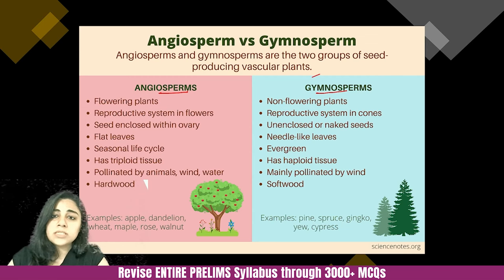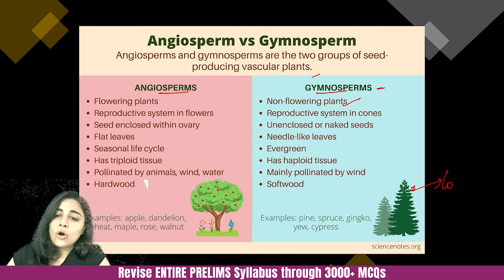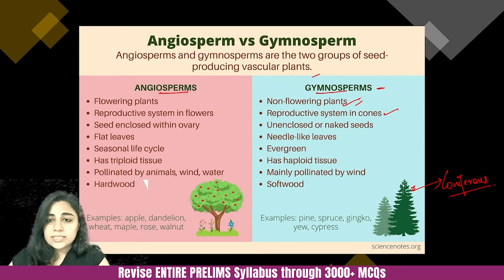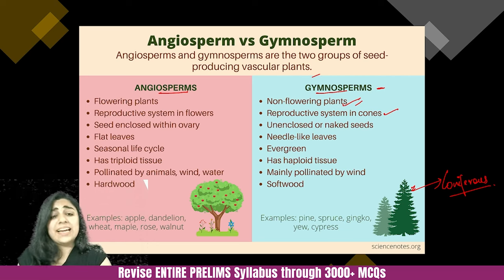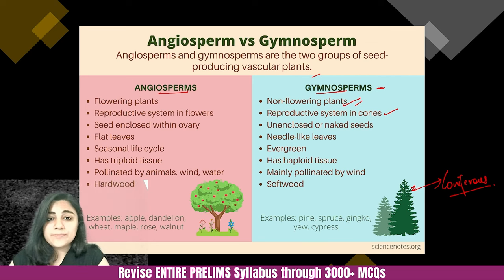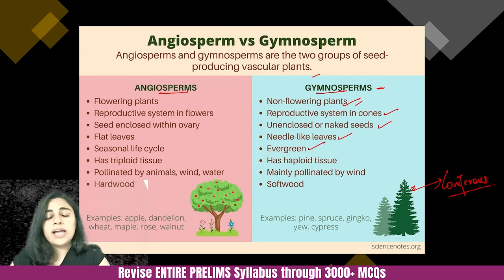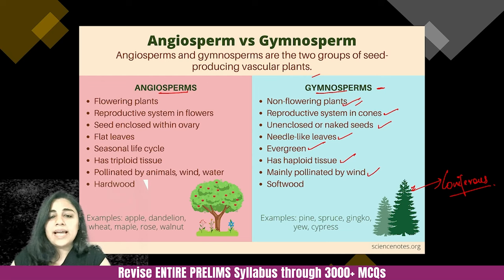Gymnosperms are non-flowering plants. You must have heard about coniferous trees, which are found in mountainous areas — those are gymnosperms. Their reproductive system is in their cones. When you go to mountainous areas, people often bring back those cones, which are actually reproductive elements of these plants. Their seeds are unenclosed or naked seeds. Their leaves are needle-like. They are evergreen in nature and don't have any shedding season. They are mainly pollinated by wind and have softwood.